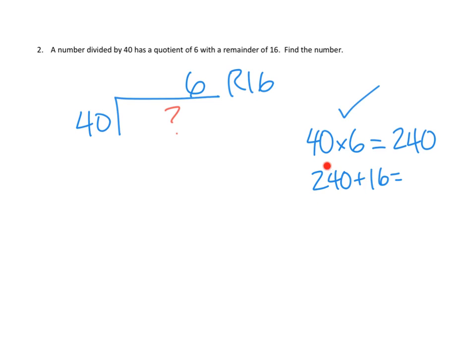And then I have to add in my remainder. So then we have 240 plus 16. So we had 24 tens plus one more would be 25 tens, and then we just have 6 ones, is 256.